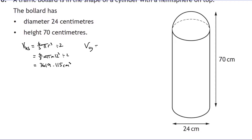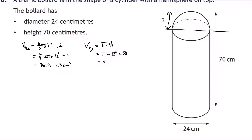For the cylinder, the formula is πr²h. The radius is 12, but the height is not the full 70 — you must subtract the hemisphere's radius of 12 from the total height, giving a cylinder height of 58. So it's π × 12² × 58, which gives 26238.582 cm³.